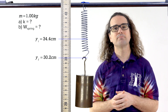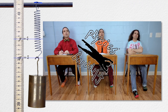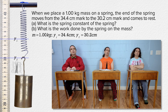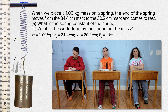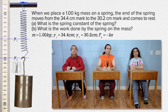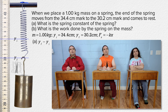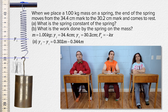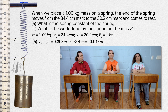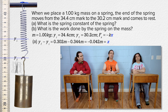Bobby, how do you think we should start this problem? We know Hooke's law says that the force of a spring equals negative k times x, or the negative of the spring constant times the displacement from equilibrium position. So let's determine the displacement from equilibrium position. It should be position final minus position initial. We should use meters instead of centimeters, so 0.302 minus 0.344, or negative 0.042 meters. That equals the x in Hooke's law equation for this situation.